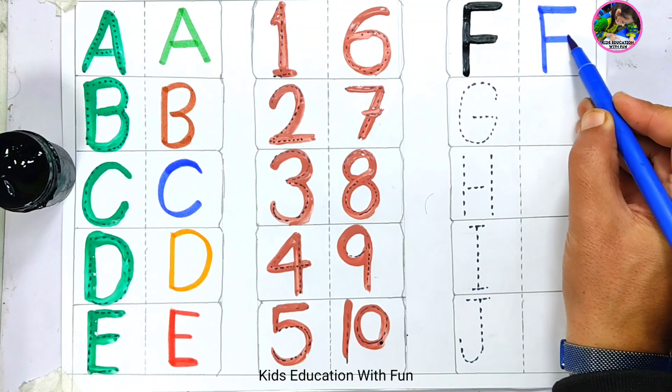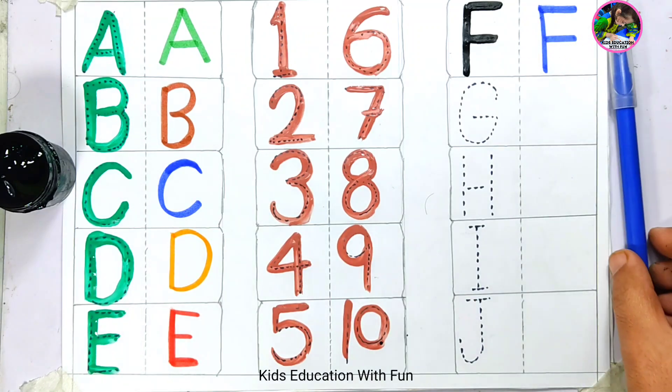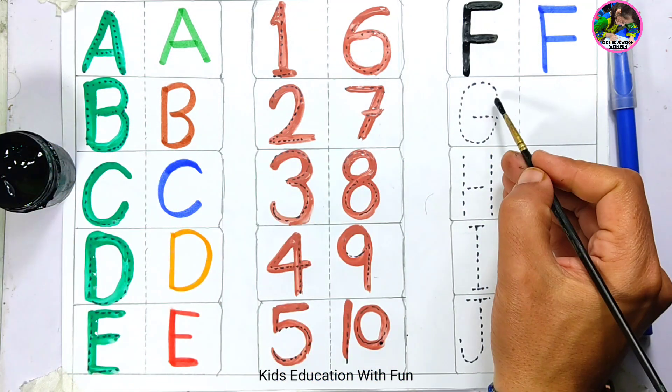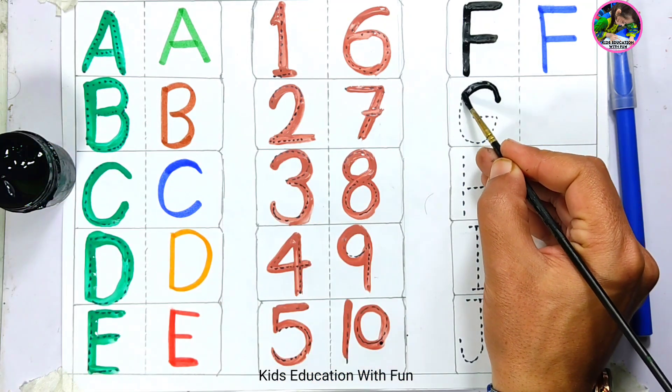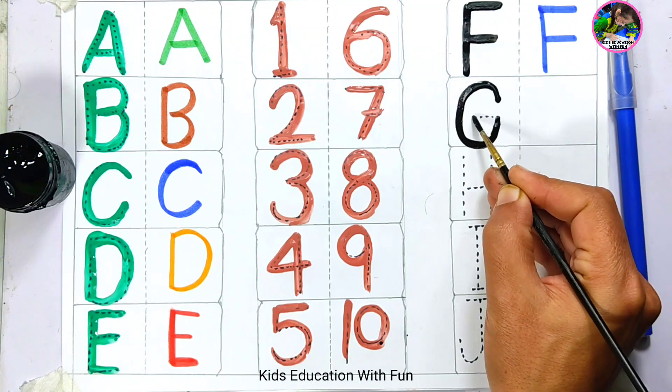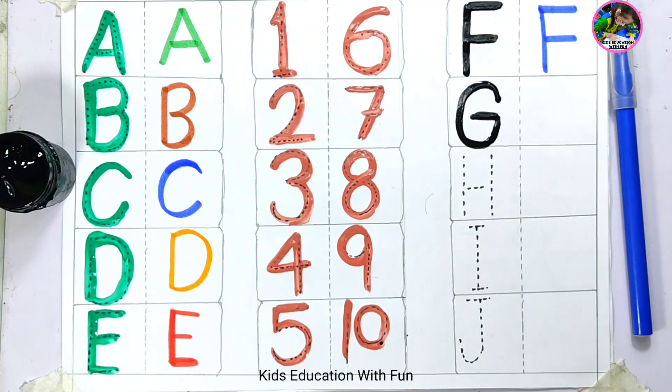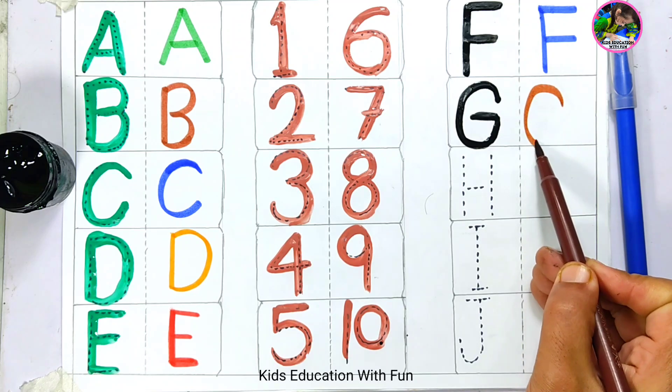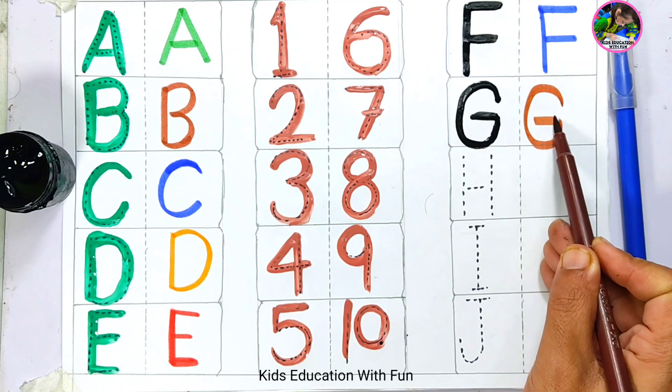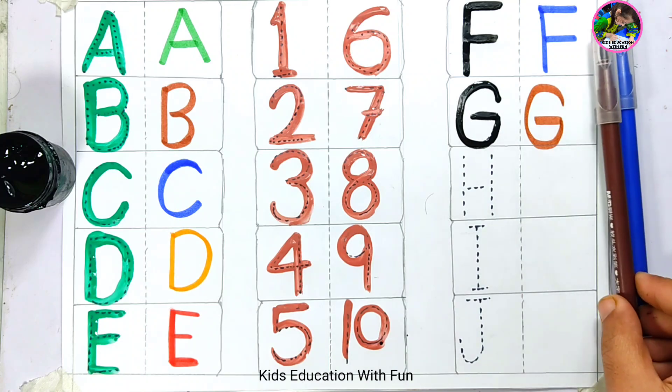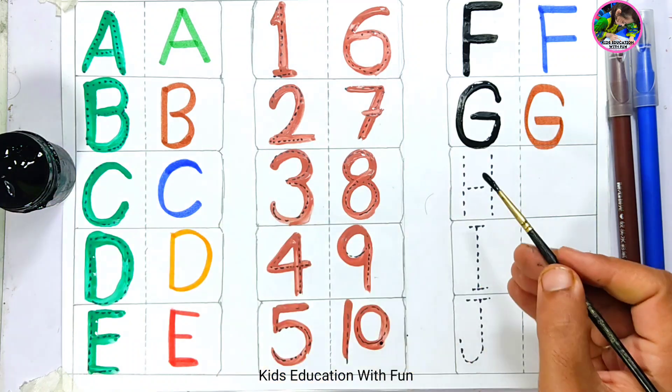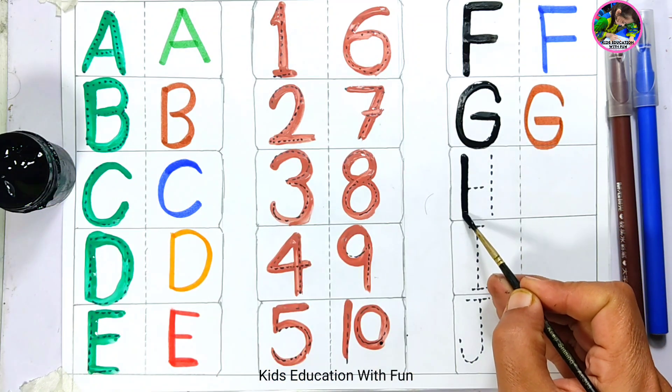Letter F. Next to letter F is letter G. This is letter G. G is for goat. You also do the same practice. G is for goat.